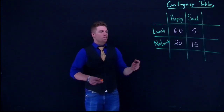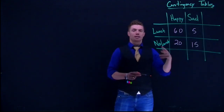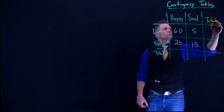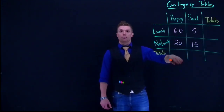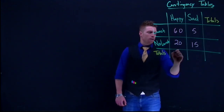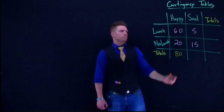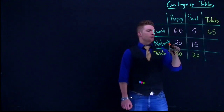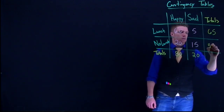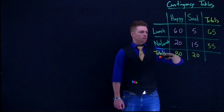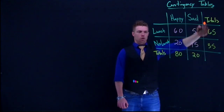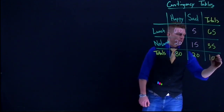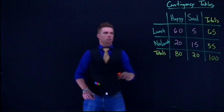We can also add what are called the marginals — the sums of each row and column — which we label as totals. When we do this we sum up either a specific column or a specific row. There were a total of 80 people who responded that they were happy and 20 who responded that they were sad. There were 65 who ate lunch and 35 who did not. Both row and column marginals sum to 100, which is the grand total.